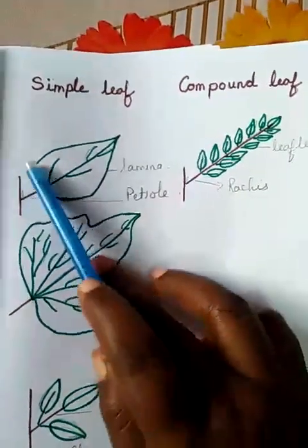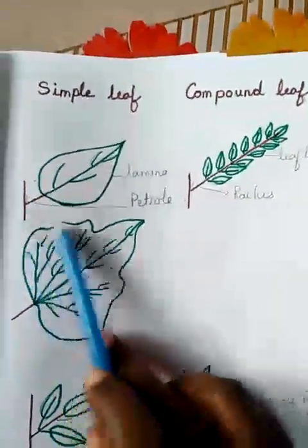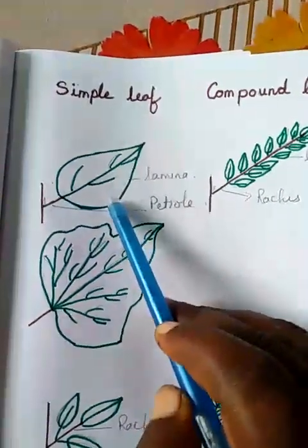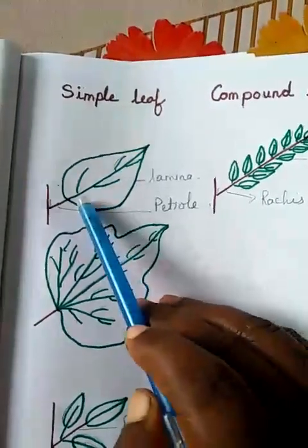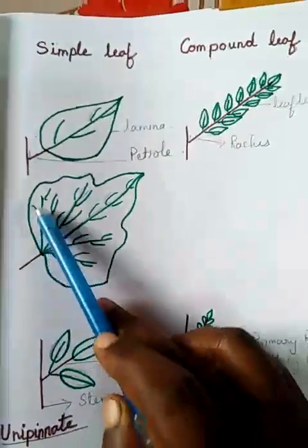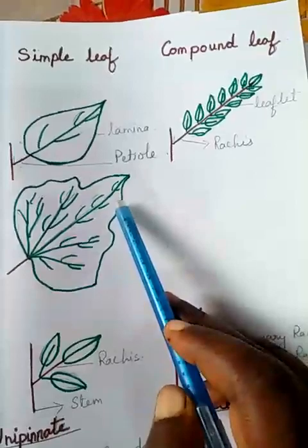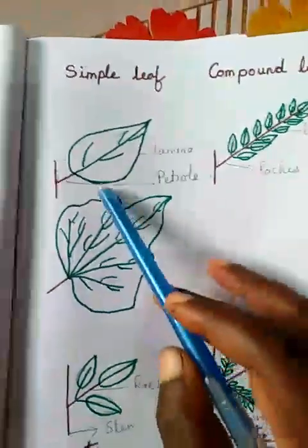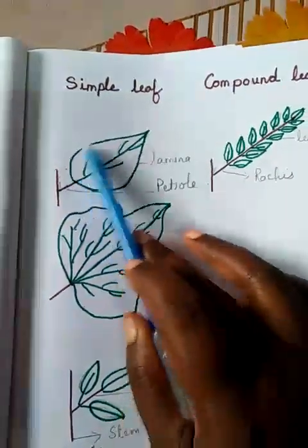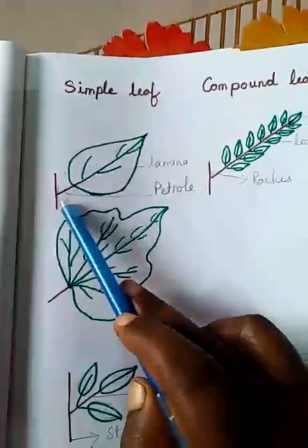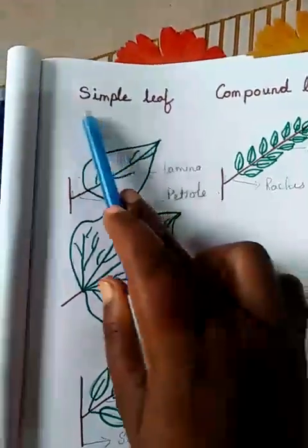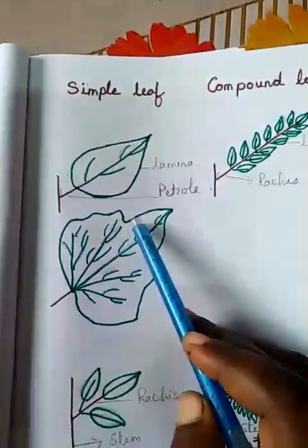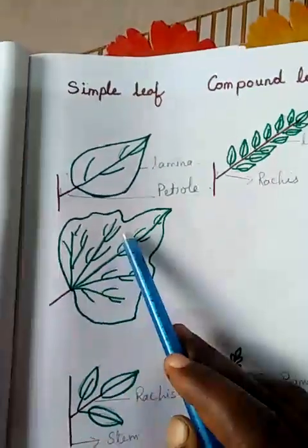In a simple leaf, on a petiole there is one single leaf lamina present. The simple leaf may have a margin which is entire, without any incision, as in mango — this is called the entire leaf. Or there may be incisions present; if these incisions are not deep enough and do not touch the midrib or the petiole, it is still called a simple leaf. If the incision comes and touches the midrib or the petiole, then we call it a compound leaf.